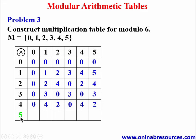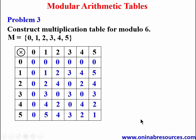We go to the last row, the row of 5: 5 times 0 gives 0, 5 times 1 gives 5, 5 times 2 gives 10 — 10 minus 6 gives 4. Then 5 times 3 gives 15; 15 minus 12 gives 3. Then 5 times 4 gives 20; 20 minus 18 gives 2. And 5 times 5 gives 25; 25 minus 24 gives 1, since 24 is a multiple of 6. We are done constructing the multiplication table for modulo 6.